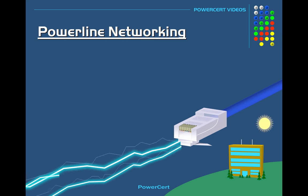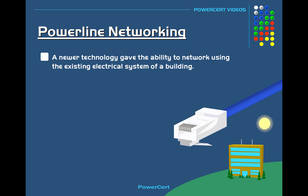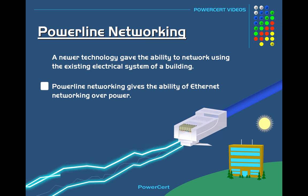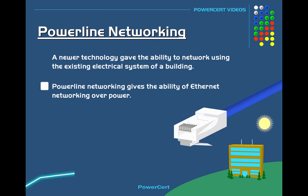So to help solve this kind of problem, a newer technology gave the ability to network using the existing electrical system of the building. Powerline networking gives the ability of Ethernet networking over power.